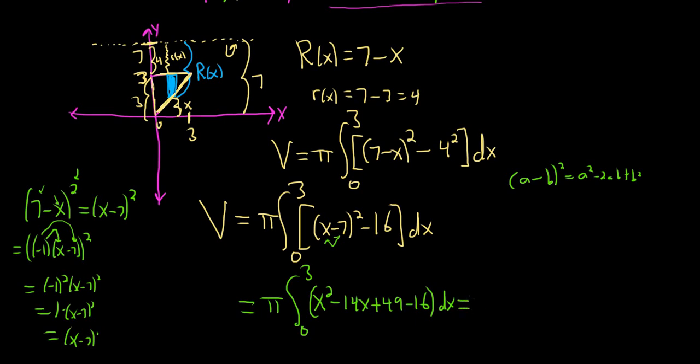So this is equal to pi, definite integral from 0 to 3. x squared minus 14x. And 49 minus 16 is 33. Okay, and we have this quadratic thing. And we just integrate this.